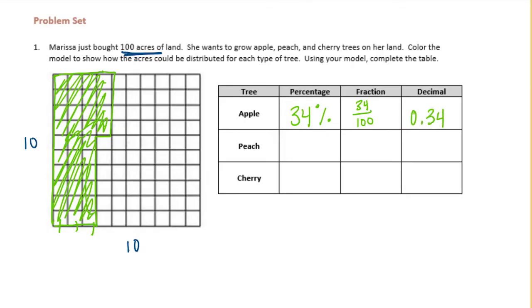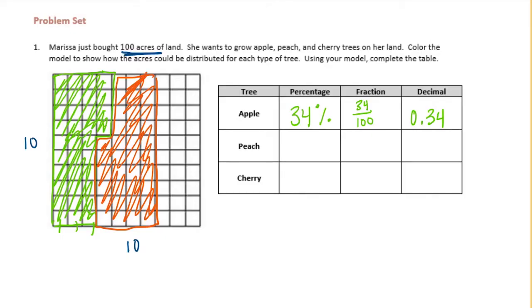So now let's do peaches. So peaches, I'm just going to, let's see, let's make a line there and use all of this space. So that is 1, 2, 3, 30. So 31, 32, 33, 34, 35, 36. So that's 36%, which would be 36 hundredths and 36 hundredths.